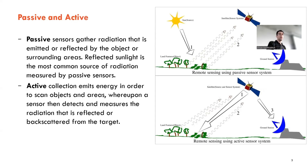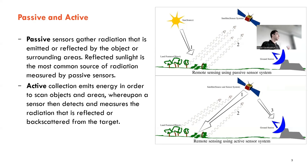We can classify remote sensing platforms into two categories: passive and active. In passive platforms, only a sensor is mounted and the source of energy is the sun — we measure the reflectance from the ground surface. In active platforms, in addition to a sensor, we also have a source of energy that emits microwave energy to the ground and measures the intensity of the reflected return. In our work for geological mapping, we typically use passive platforms.